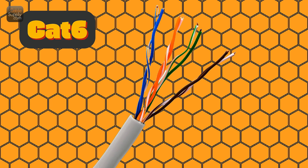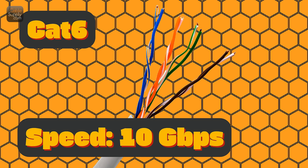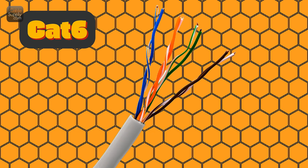CAT 6 — even faster and more reliable. Speed: very fast, can do 10 gigabits per second over short runs. Used for faster downloads, smooth 4K streaming, serious gaming. Should I use it? Great if you want better performance or future upgrades. CAT 6 is like the sport version of CAT 5e. It can handle heavier use and faster speeds, especially over shorter distances like between rooms. It's a smart pick if you're building a setup that needs to handle a lot of data.